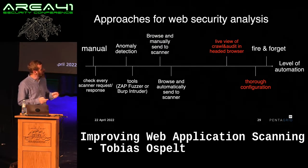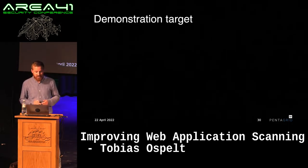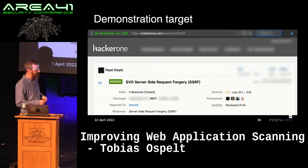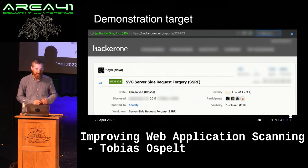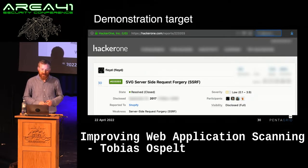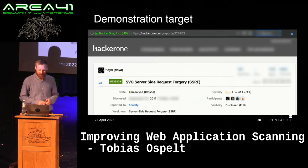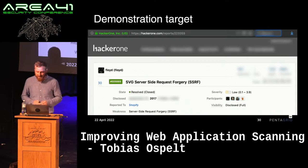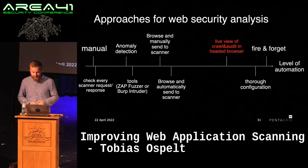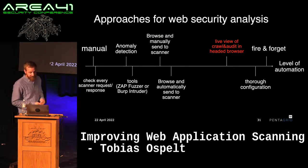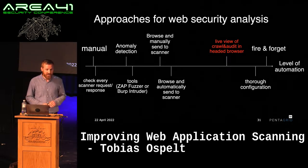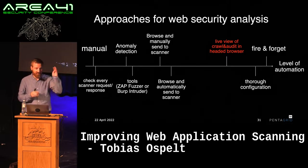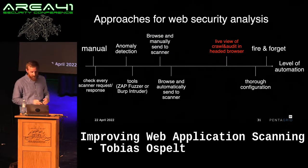I needed a demonstration target, so I randomly chose Shopify because I had prior experience — I found a bug there once. Shopify is a website that lets you create an online shop, and it has an administrative area which is what I want to use for my demonstrations. I found a server-side request forgery there once, but that's not really related to what we're doing today. The first thing I want to show you is the live view of crawl and audit with a headed browser — that means the browser is controlled by the scanner but still opens the UI so you can see everything it's doing.